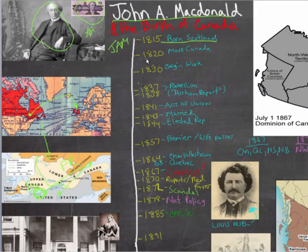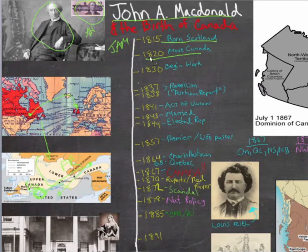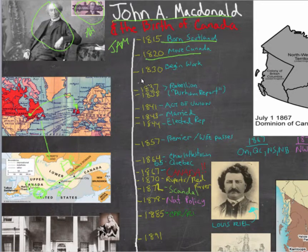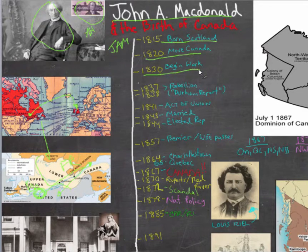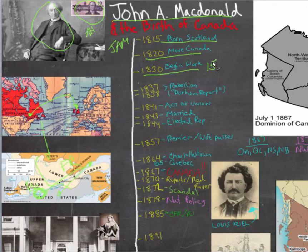Shortly after arriving in Canada in 1820, the family suffered a tragedy — it would be the first of many in John A. MacDonald's life. His brother was hit in the head by a servant, and he died. Additionally, as the family grew up in Upper Canada, they struggled financially. At the age of 15, MacDonald left formal schooling and entered an apprenticeship to become a lawyer.